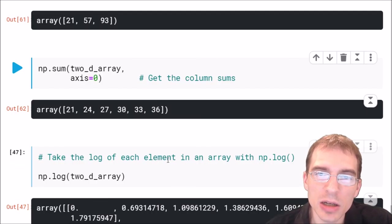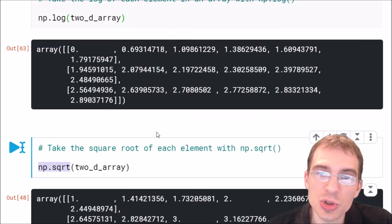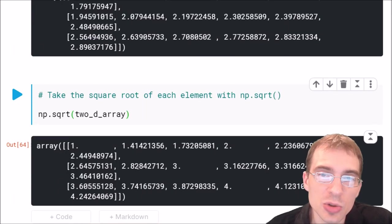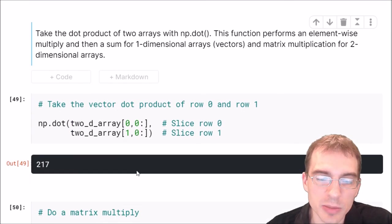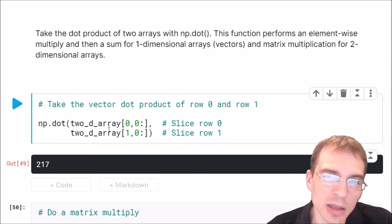You can take the log of all the items in a NumPy array with np.log. You can do square roots with np.sqrt. If you need to do dot products, you can do that with np.dot. That will take two arrays, multiply all the elements within them element-wise, and then add them all together, resulting in a single scalar value at the end.